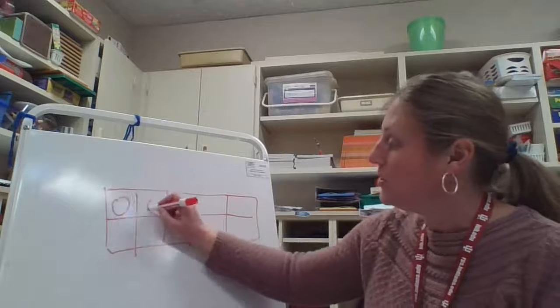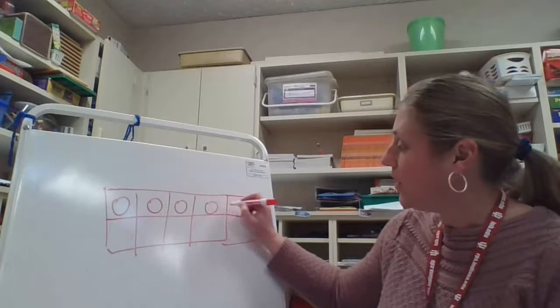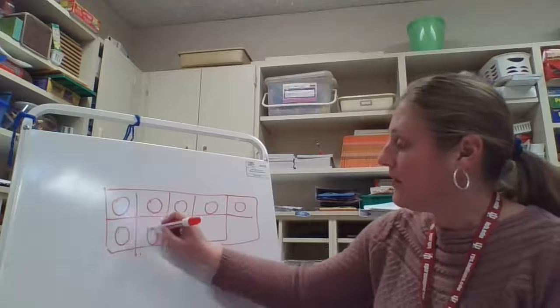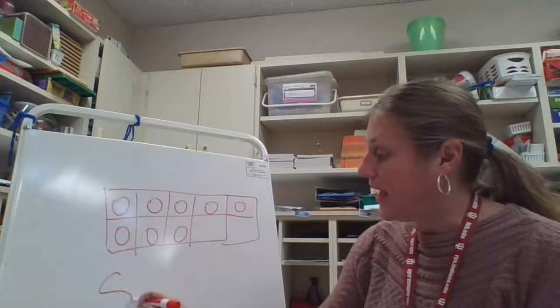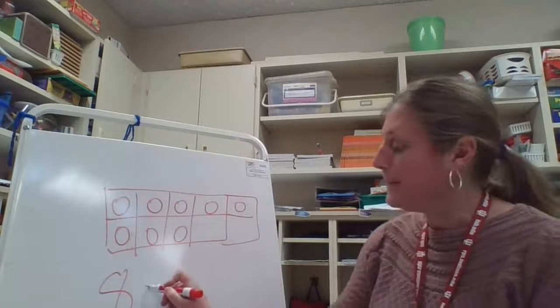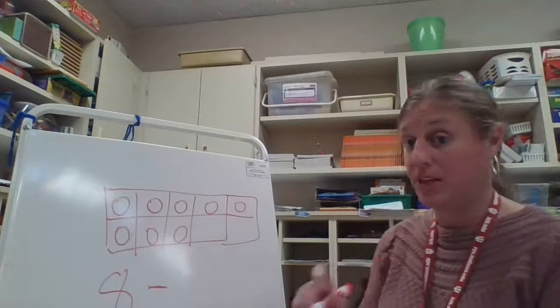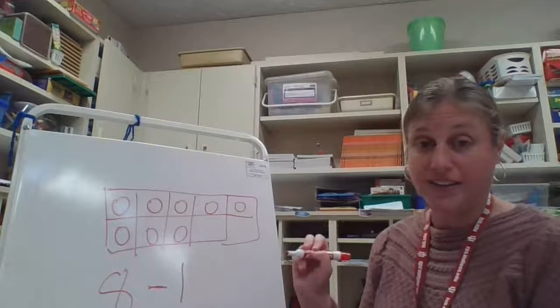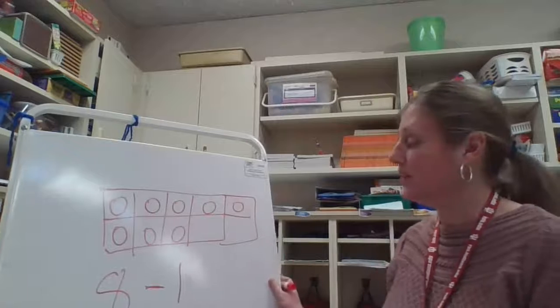So I have eight circles: one, two, three, four, five, six, seven, eight. So it says eight and it says minus, I'm taking away, this is how many I'm taking away, one. How many are left? Well, let's see.